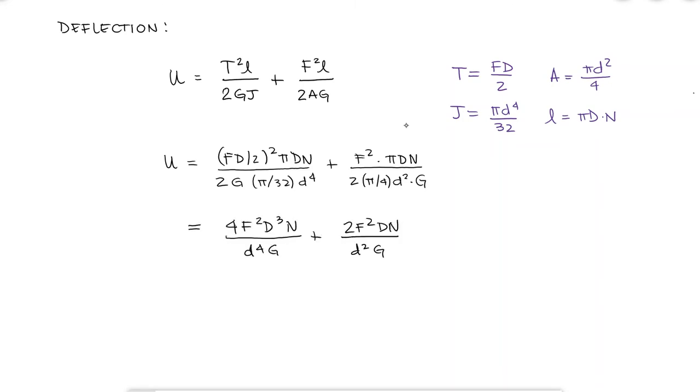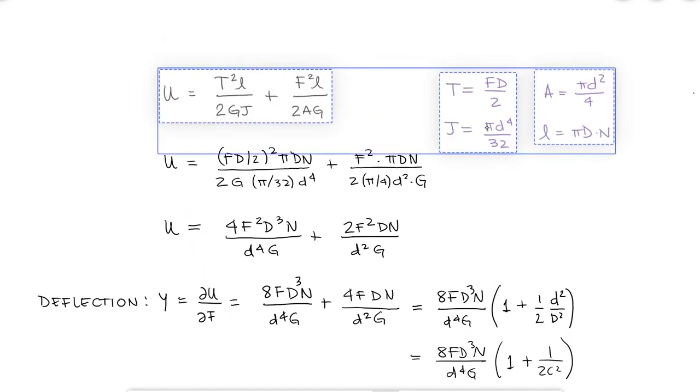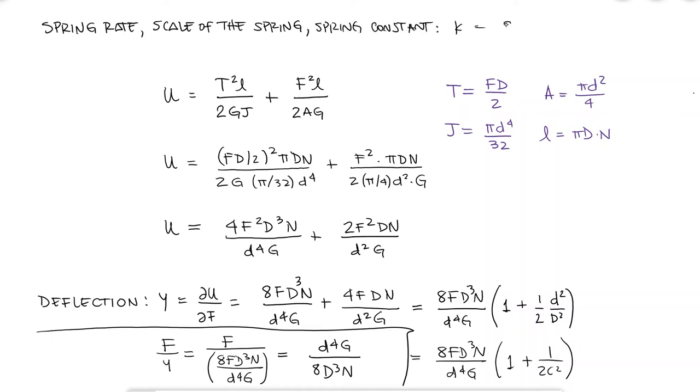Using Castigliano's theorem, covered in the same video mentioned above and one of the links below, we can find the total deflection Y as the partial derivative of the energy with respect to the force F. The derivative of both terms will give us a 2 times F times the other variables. Factoring out the entire first term and remembering that the spring index C is D over d, we can divide force over deflection Y to find an expression for the spring rate, scale of the spring, or spring constant K.